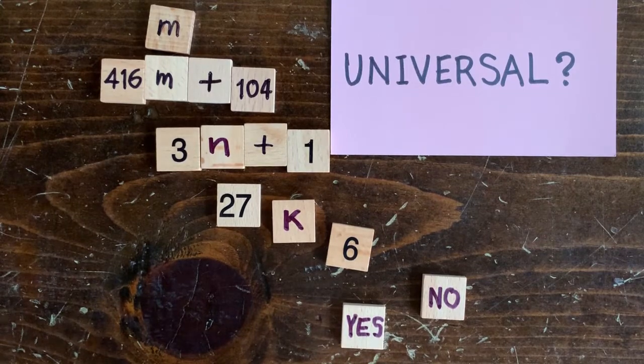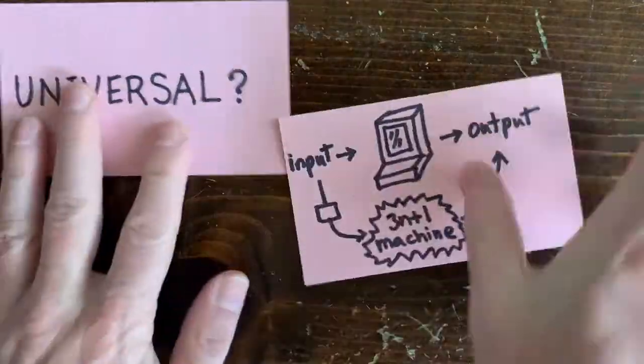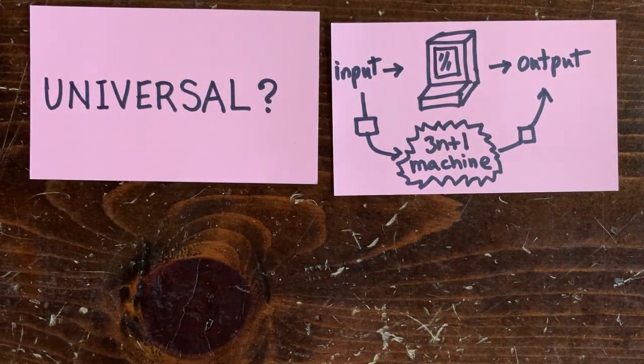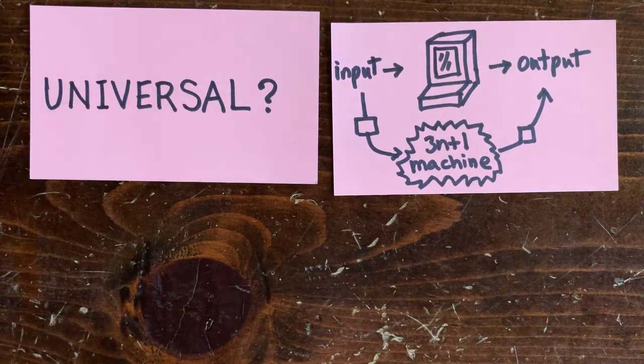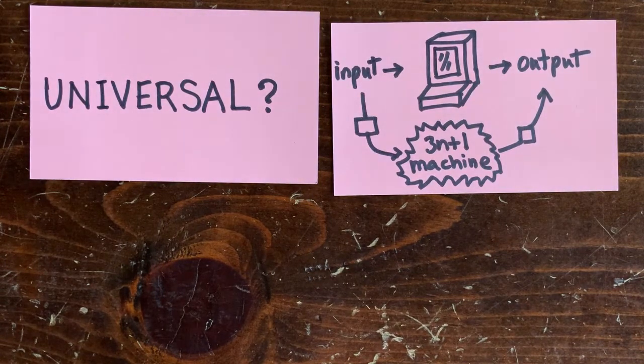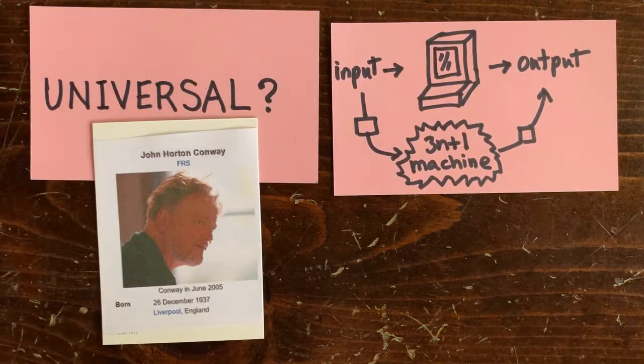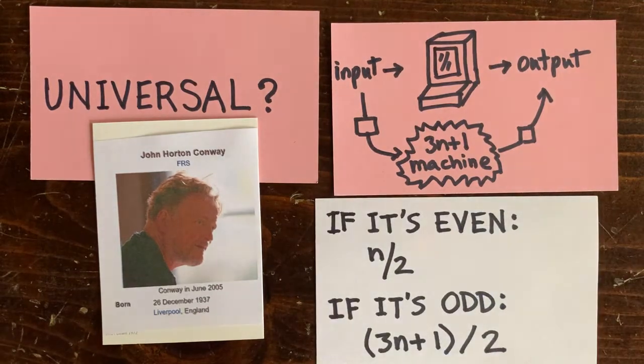But it would be cool if we could hijack the 3N plus 1 machinery to do not just that but any other algorithm. Actually, it might even be possible to do that. The 3N plus 1 machinery might have universal computation power. Nobody knows. The famous mathematician John Conway came up with a variant of the 3N plus 1 function that does have universal power.